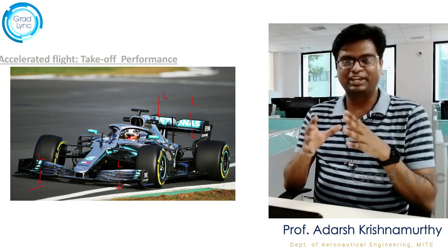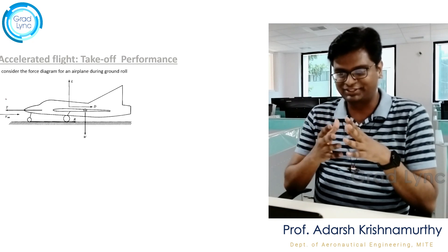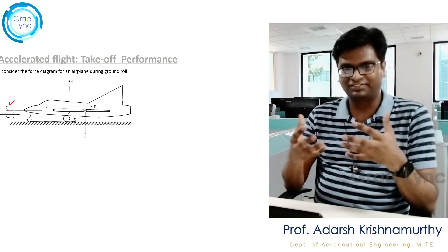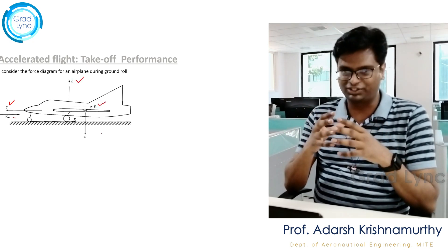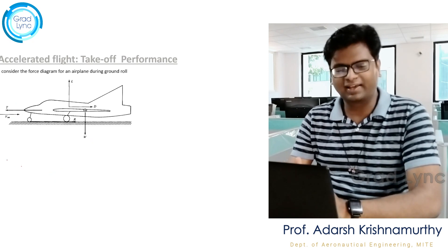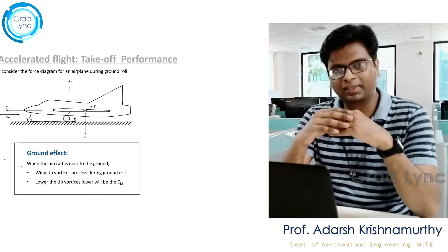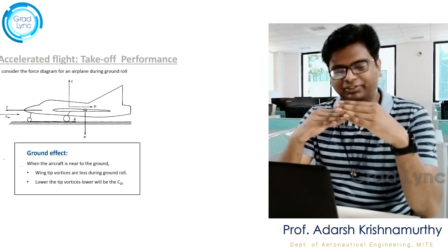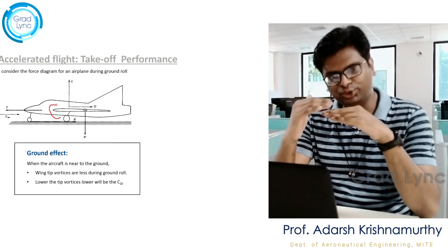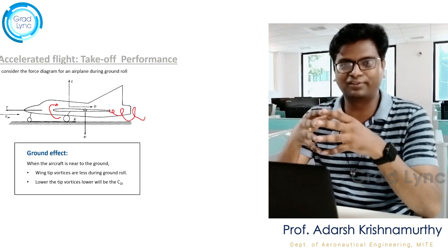Now let's move on to the takeoff analysis. Consider an aircraft whose body force diagram includes thrust force along the flight path, free stream velocity opposite to that, lift and drag forces due to the free stream velocity, and the weight acting downwards. Before moving into the aerodynamics, let's understand a new concept called ground effect. Because of the pressure difference between the upper and lower surfaces of the wings during flight, high-pressure air from the lower surface tries to move to the upper surface at the wing tip, leaving a trail called wing tip vortices.